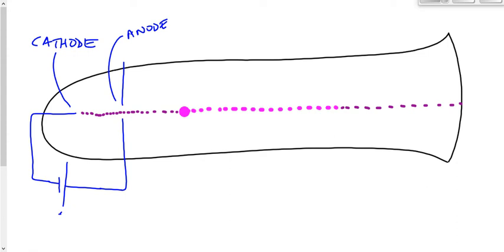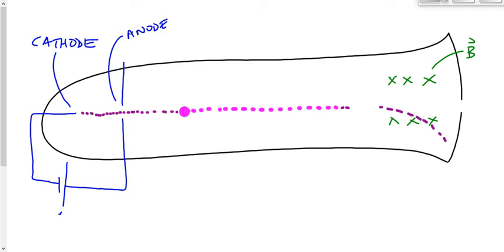But nobody had any concept that it was subatomic charged particles like we do now. Thomson wanted to figure out what these cathode rays were. So he introduces a magnetic field — in this case, drawn into the board, though it could have been out of the board as long as it was perpendicular to the motion of the cathode rays. That caused these cathode rays to be deflected — to change direction. Instead of going straight through, now the cathode rays go in a circle while they're in that magnetic field.